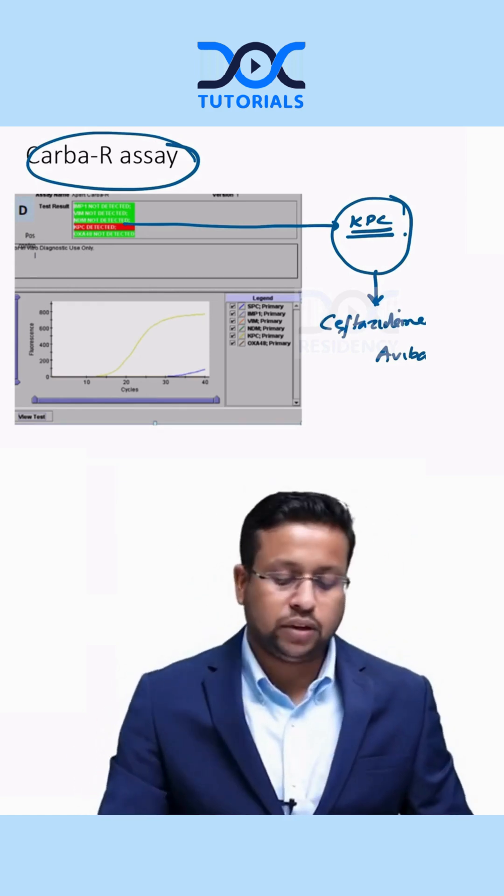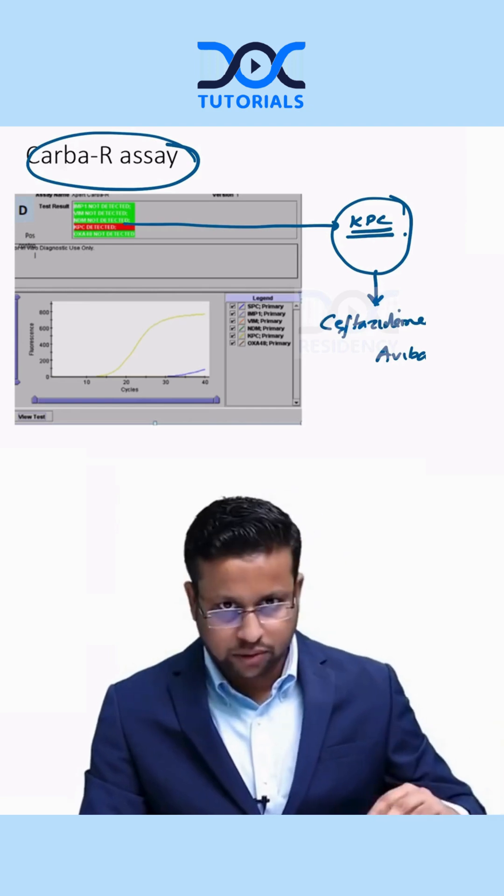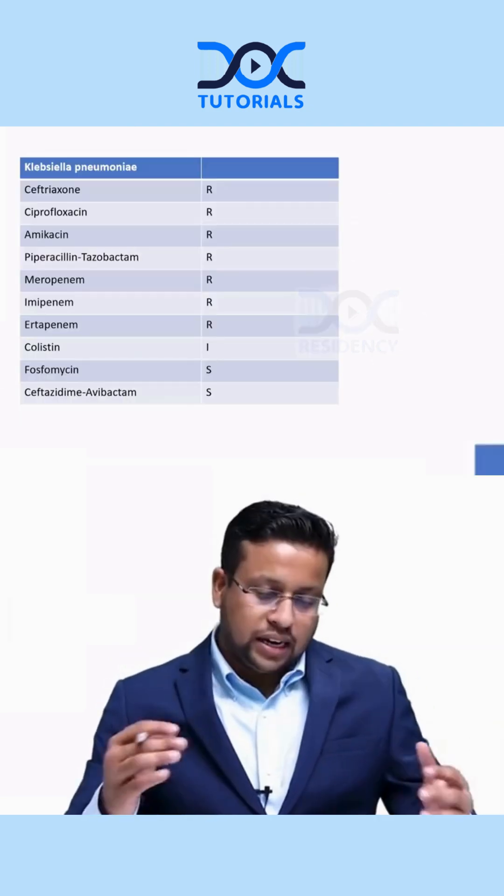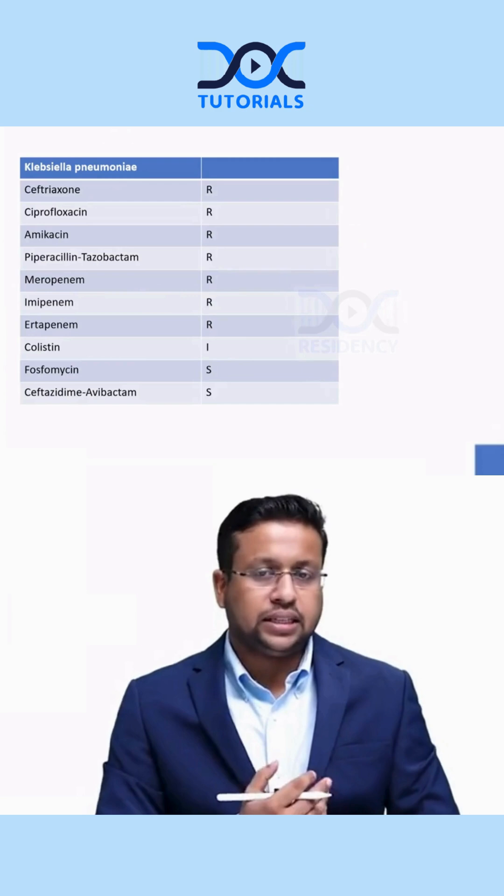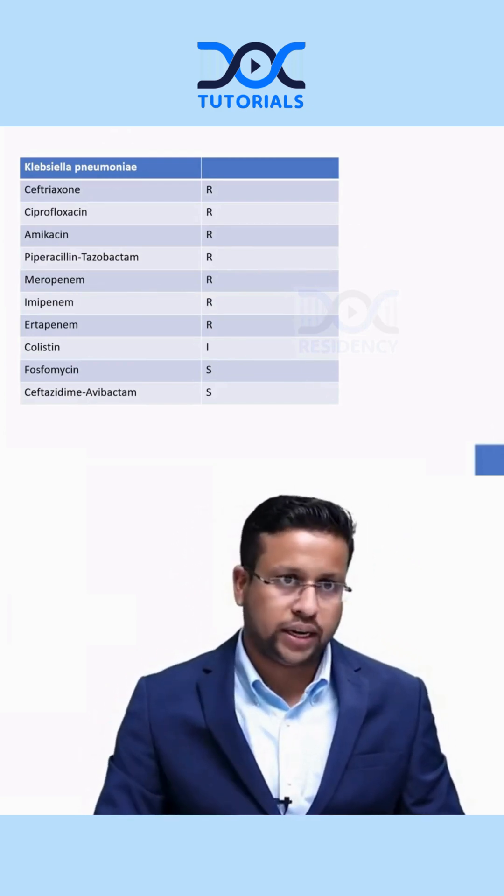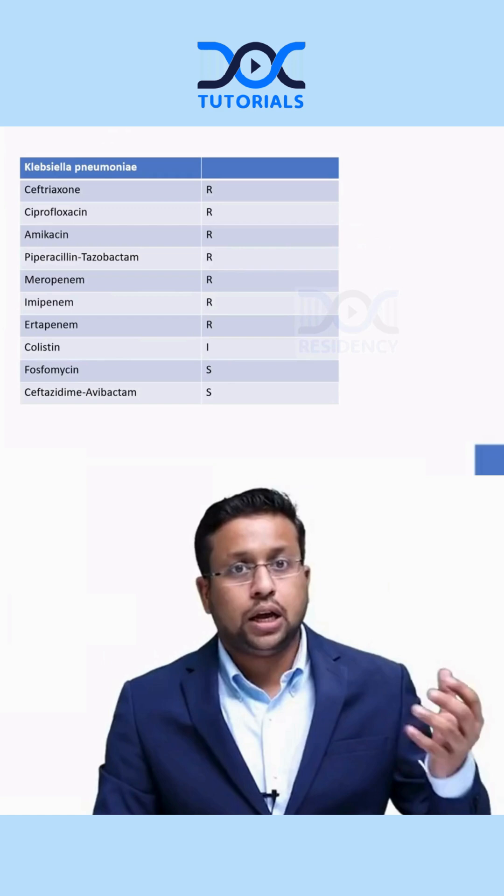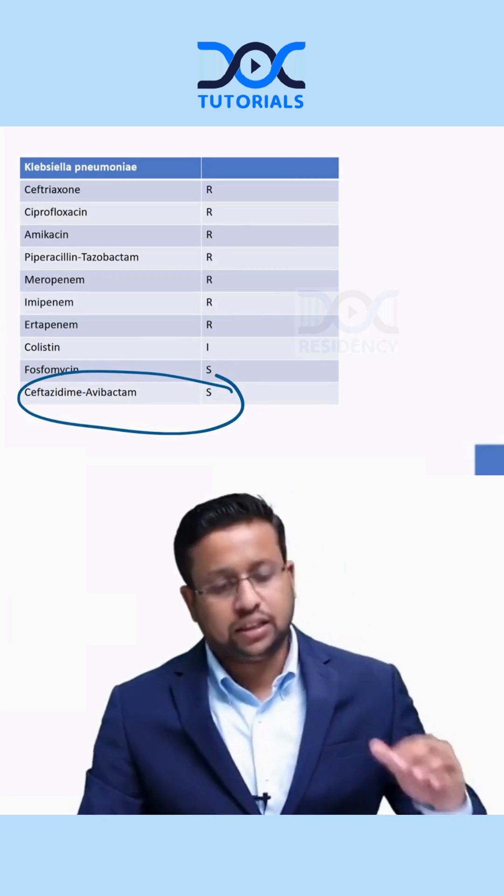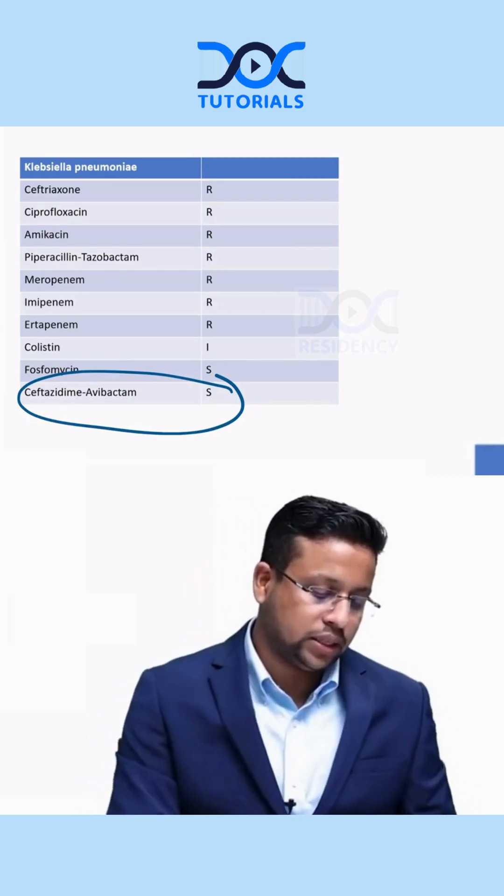Here we used Ceftazidime-avibactam. We stopped meropenem and polymyxin, which were first started, and used Ceftazidime-avibactam for this patient. The culture later, after the sensitivity came—which will take another 48 hours to get (before that you can do a CARBA-R and look at the resistant gene)—the culture also showed that the organism was sensitive to Ceftazidime-avibactam, that is, Klebsiella pneumoniae.